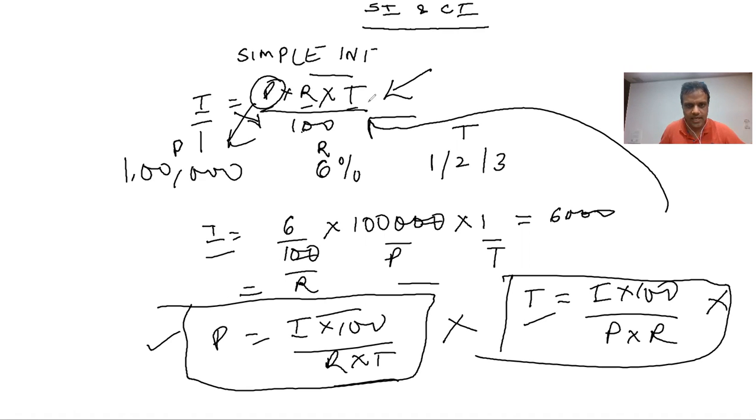Coming to the time, where is time? This is time. How can we find out the value of T? Again, cross multiplication. I into 100 divided by P into R. If this has to go on this side of the equation, divided by P into R. This is where what it is written. I into 100 divided by P into R.